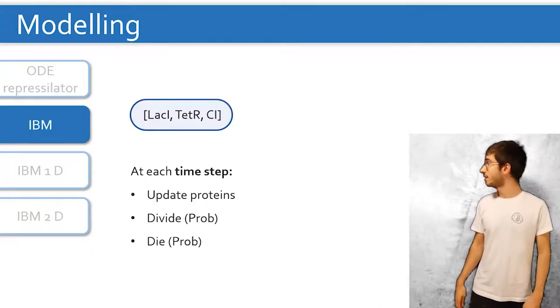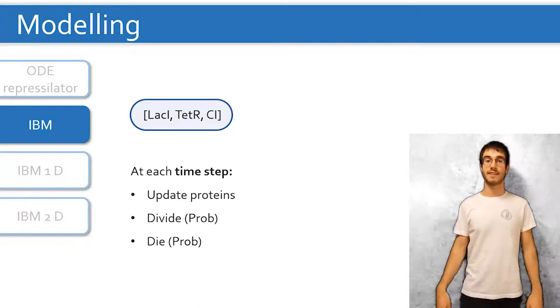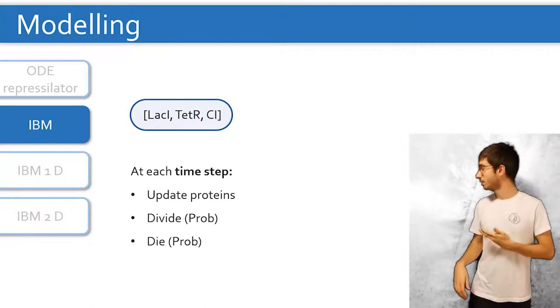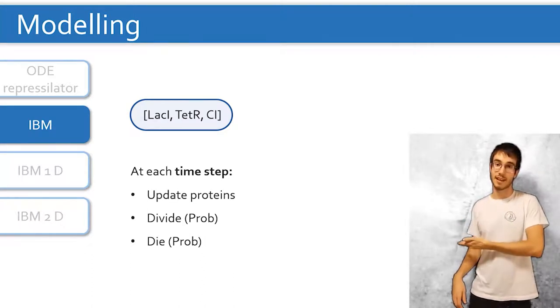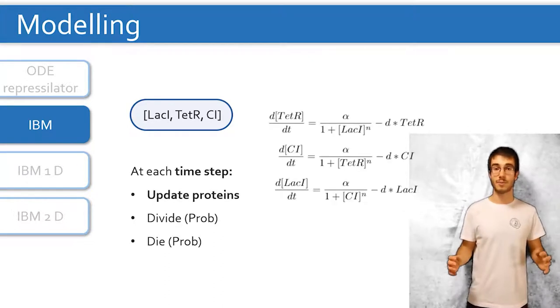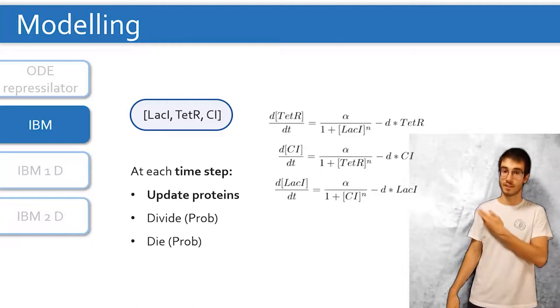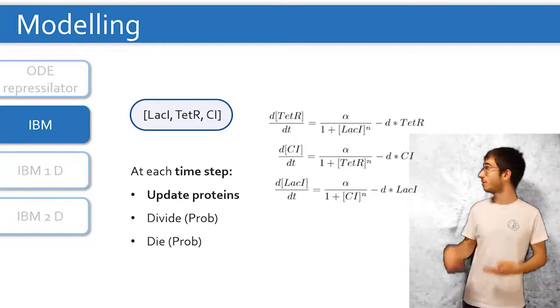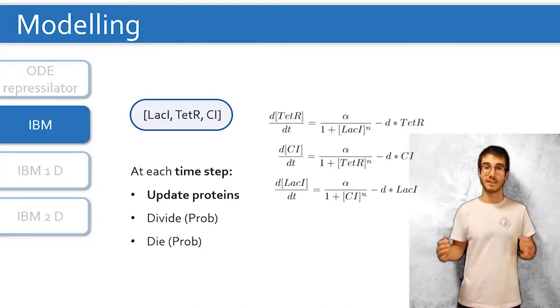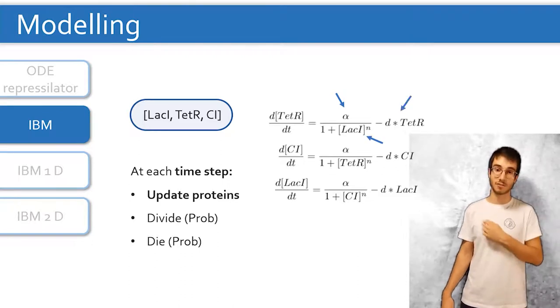It's something like this. We have simplified a bacterium to a list of the three proteins in the repressilator. Then we have discretized time in different time steps. So at each time step, a bacterium could update the number of proteins it has, divide or die with some probability. The way in which a bacterium updates its list of proteins is going to be determined by a system of differential equations. Here we track how the three proteins change over time. So for example, CI is going to be produced proportionally to the rate alpha, is going to be inhibited by LacI, and the last term accounts for protein degradation.